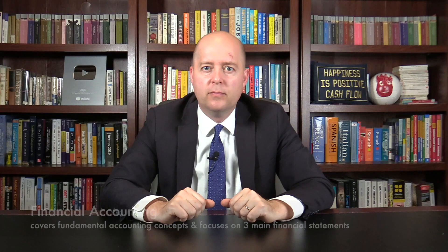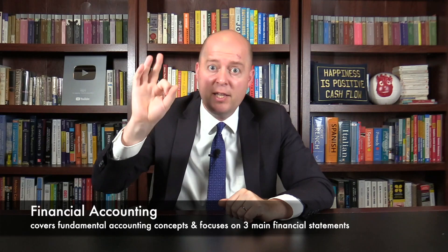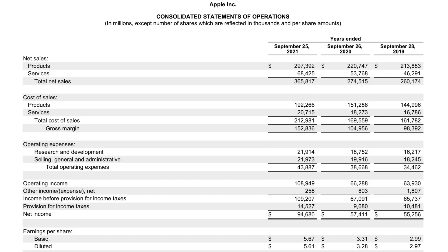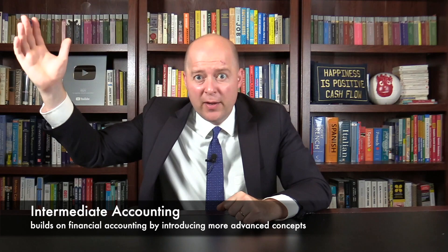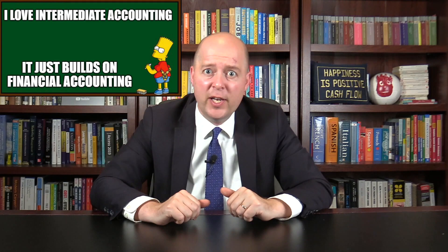Financial accounting covers fundamental accounting concepts like debits and credits and focuses on the three main financial statements: the income statement, the balance sheet (aka the statement of financial position), and the statement of cash flows. Intermediate accounting builds on financial accounting by introducing more advanced concepts, but you're still focused on making the financial statements for investors and creditors.